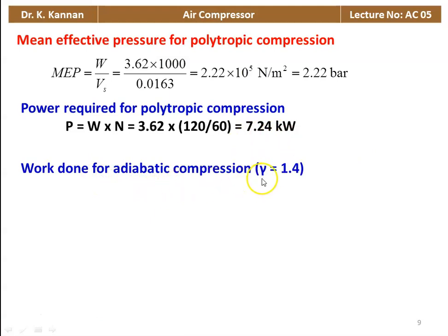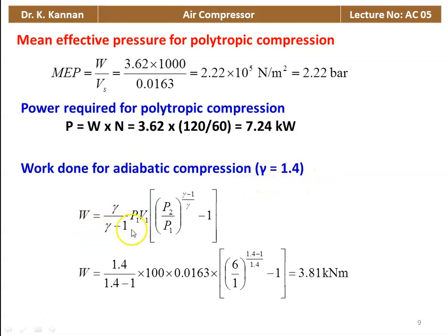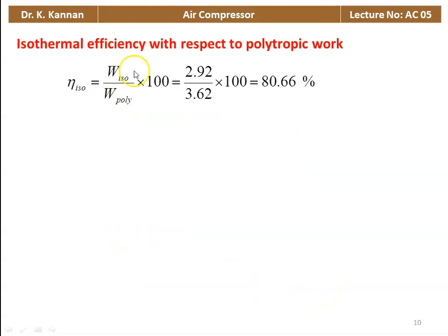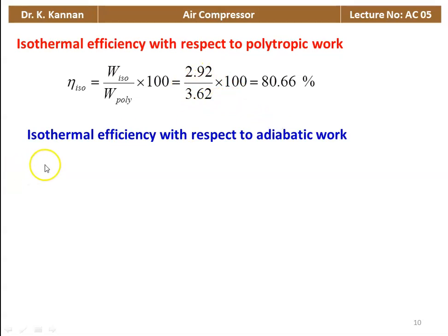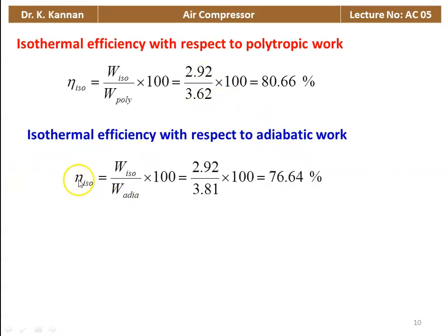Work done for adiabatic compression (γ = 1.4): W = (1.4/0.4) × 100 × 0.0163 × [(6/1)^(0.4/1.4) - 1] = 3.81 kN·m. Isothermal efficiency relative to polytropic work = (2.92/3.62) × 100 = 80.66%. Isothermal efficiency relative to adiabatic work = (2.92/3.81) × 100 = 76.64%. These are all the answers to the problem.